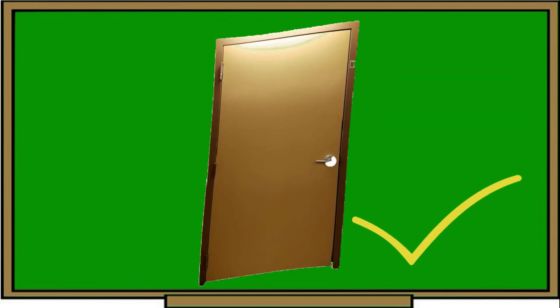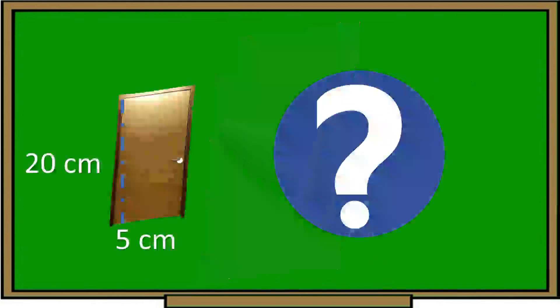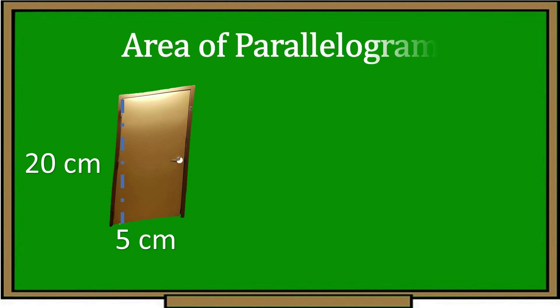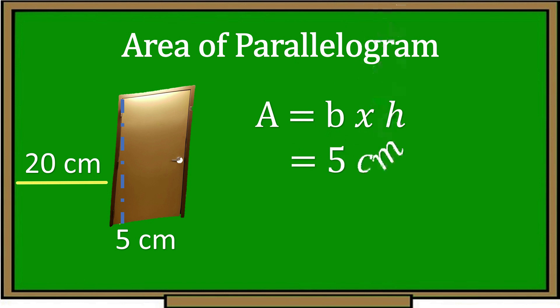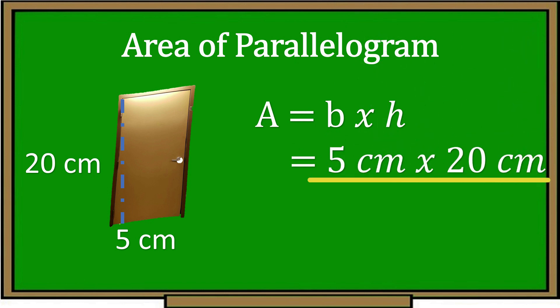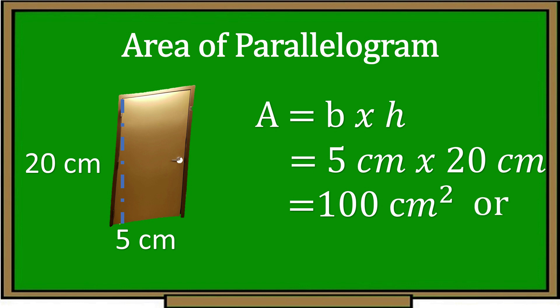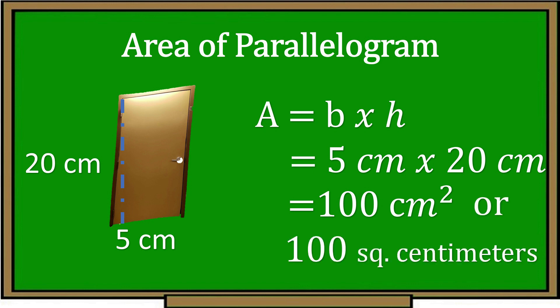What figure is this? Correct! This is a parallelogram. What object is this? Great job! This is a door. Suppose a door has the following dimensions: base is 5 cm and a height of 20 cm. The formula of a parallelogram is area equals base times height. Let's substitute: base is 5 cm times 20 cm, which gives an area of 100 cm².